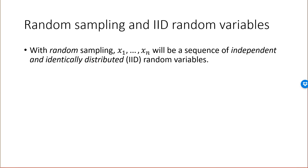When I pick my first sample point I pick it from the population with the given distribution. When I pick my second sample point I pick it from the same distribution. So the random variables are independent and identically distributed when I do random sampling, and that's such an important concept that we typically just write iid random variables.